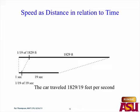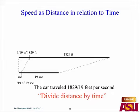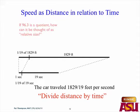You notice it's a quotient — 1,829 divided by 19. That's the process that helps you understand why you divide distance by time to get speed. The amount you travel every second, that's speed — that's rate. Some of you might have put this in your calculator. That quotient is 96.3.